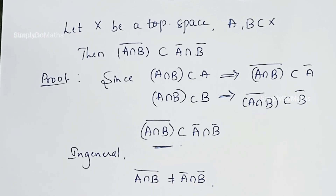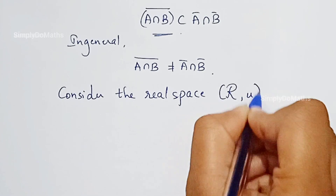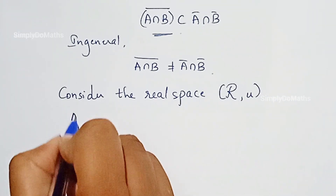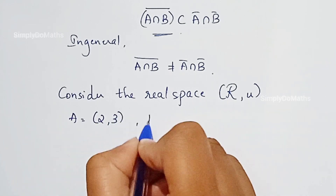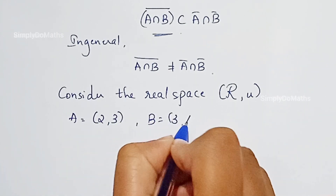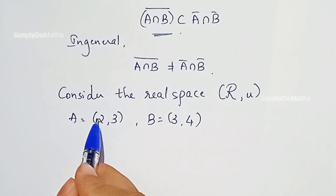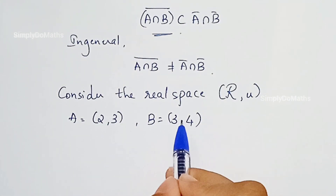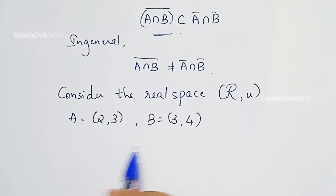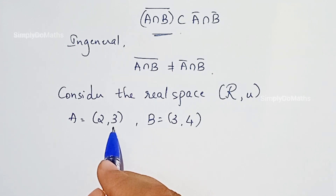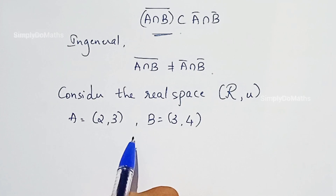Consider the real space R. Let us consider two sets: A equal to the open interval (2, 3), and B equal to the open interval (3, 4). In the real space, we take intervals — they may be open intervals or closed intervals. Here I am considering open intervals.